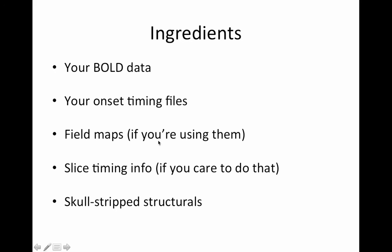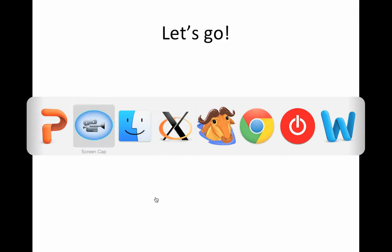Field maps, if you're using them - nine times out of ten I'm fine without them. All field map correction does is help improve the image registration if you had signal dropout. Slice timing information, if you care to do that - double check it. I know of a group that thought they knew the slice timing and it was actually the opposite, so it had been done wrong for a while. Also your skull-stripped structurals, which came from a previous step. If you don't have those ready, go watch that video first.